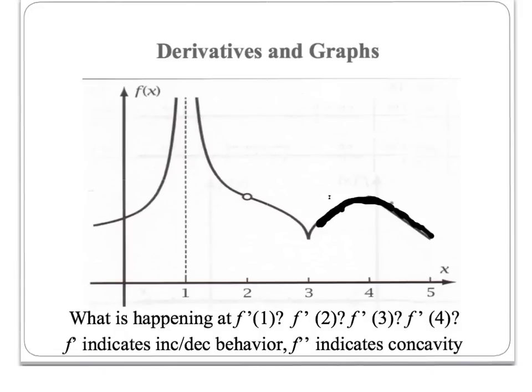Let's take a look at derivatives and how they're represented in graphs. Here's a function that has lots of different characteristics. The question is, what's happening at f prime of 1? If I look at x equals 1, there's an asymptote. When there's an asymptote, there's no tangent line, so at f prime of 1, the derivative does not exist because of that asymptote.